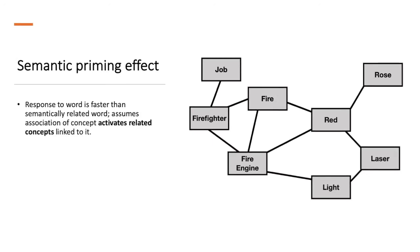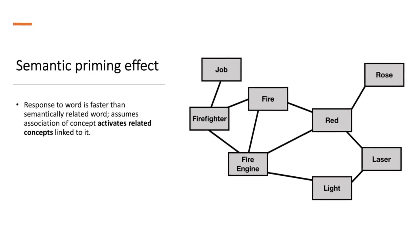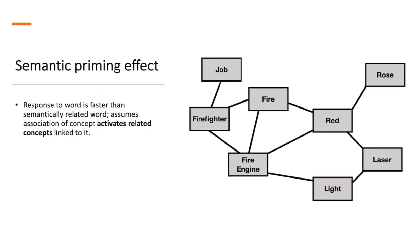Semantic priming effects. This is a response to words that are faster than semantically related words. It assumes that association of concepts activates related concepts that are linked to it.